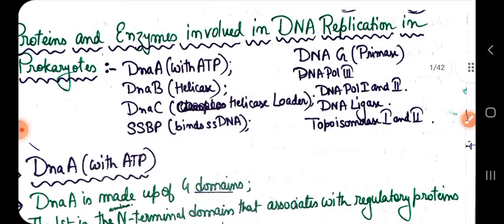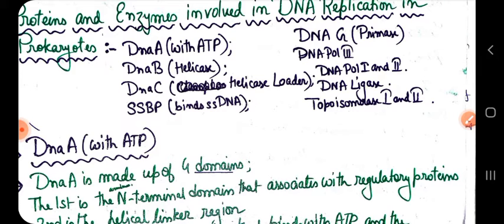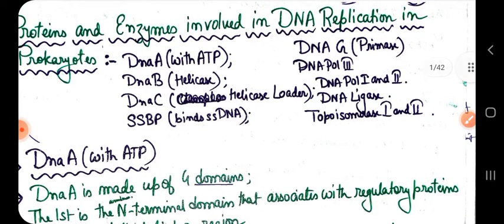Then comes DNA ligase. DNA ligase joins the two strands with the help of phosphodiester bonds, and for this activity it needs ATP. The last ones are Topoisomerase 1 and 2, which overcome the super-coiling of DNA. Super-coiling normally occurs when your DNA starts to unwind — done by DnaA and later by DnaB.